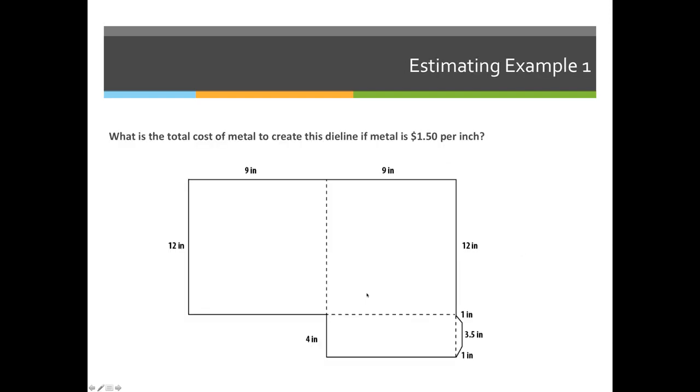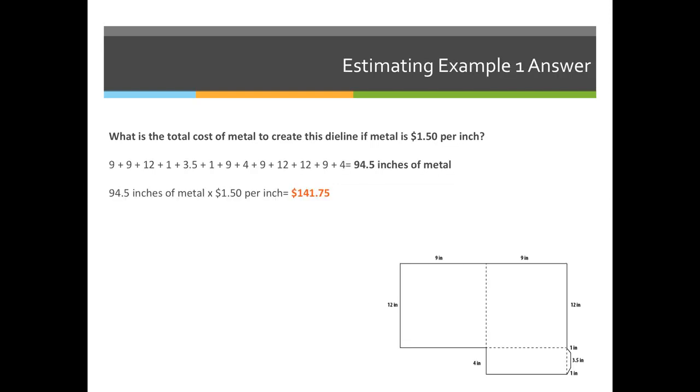So let's go ahead and let's try to figure out the cost of this die, assuming that every 1 inch will cost us $1.50. So we'll add up the perimeter, which is 9 plus 9 plus 12 plus 1 plus 3.5 plus 1 plus 9 plus 4 plus 9 plus 12.